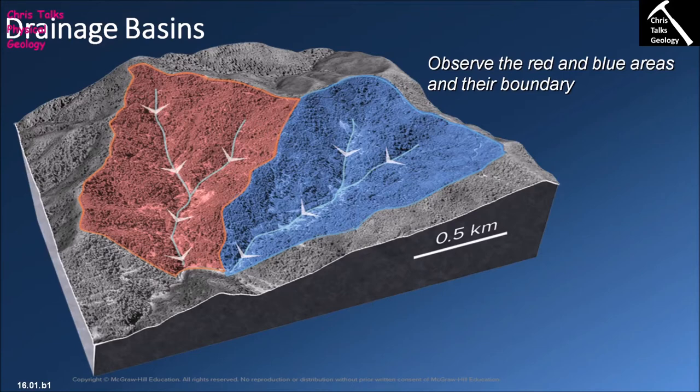A drainage network, as the name suggests, is a network of river channels which are used to drain water from a set area of the Earth's surface. Geologists are so obsessed with running water because moving water is arguably the most important agent for the erosion of rocks, the transportation of sediment, and the deposition of sediment.